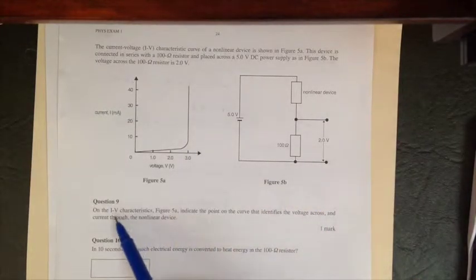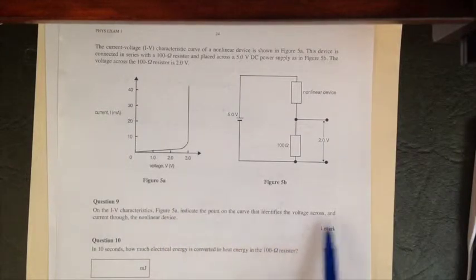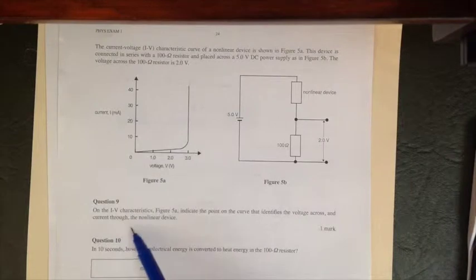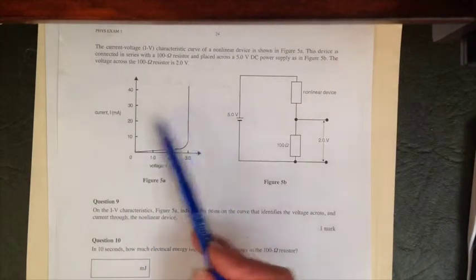First, we're asked to put on the figure and indicate the point where the curve of the voltage through the current for the nonlinear device. So whereabouts are we on this curve here?